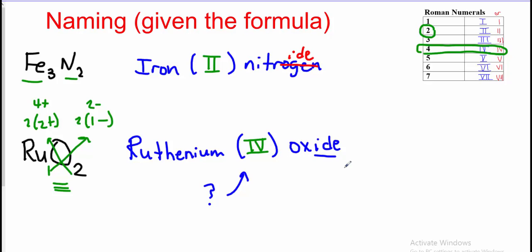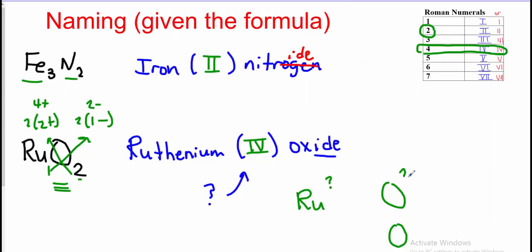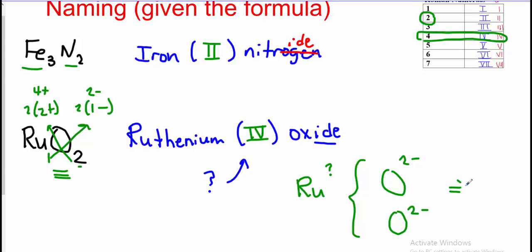Using the mental math method for RuO2: I have one ruthenium atom with an unknown charge and two oxygen atoms — the subscript 2 tells me there are two of them. Oxygen has a 2− charge, so I have negative 2 and negative 2 on the nonmetal side, giving an overall charge of negative 4. To balance, I must have a positive 4 charge on my one ruthenium ion. Therefore the charge on ruthenium is 4+, and I write that in brackets in the name. Both methods confirm ruthenium(IV) oxide.